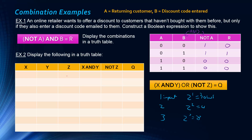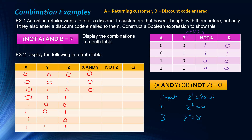Counting up in binary from zero to seven covers all eight combinations. The next step is to fill in the intermediate columns. First evaluate X AND Y — in brackets — which is only one when both X and Y are one, so only the bottom two rows are one. Then evaluate NOT Z, which is simply the opposite of Z.